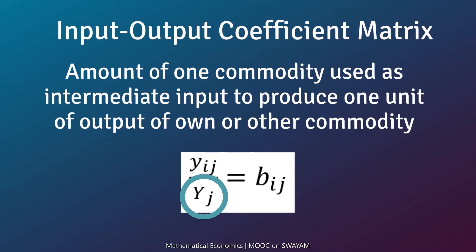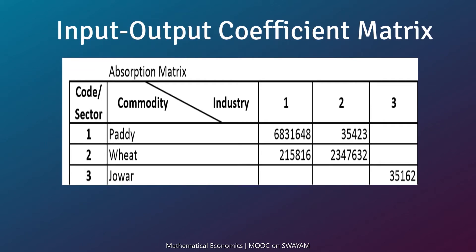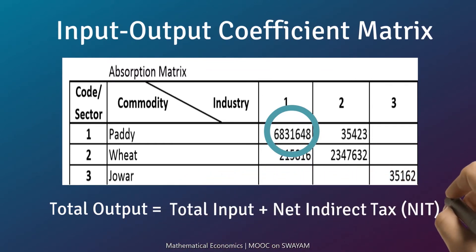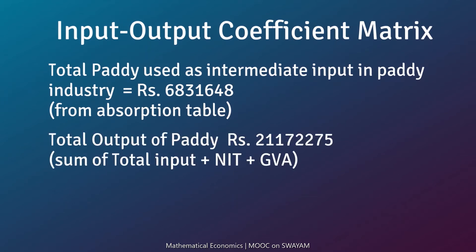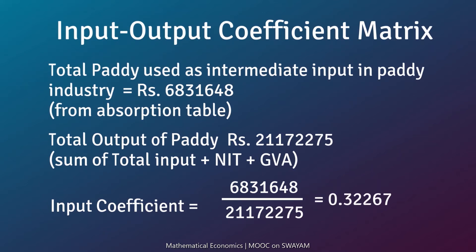This ratio gives the input-output coefficient. In the absorption matrix discussed earlier, the amount of paddy used as input in the paddy industry is 6831648. The total output is calculated by adding the total input (the column sum) plus net indirect tax and gross value added. Suppose the total output of the paddy industry is ₹21172275. Then the ratio of input to output gives the input-output coefficient. Thus 0.32267 is the input-output coefficient.